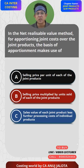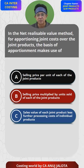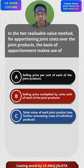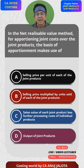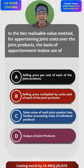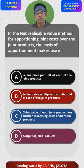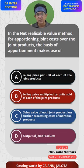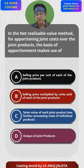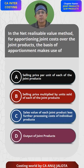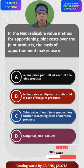Option C: sales value of each joint product less further processing cost of individual products. Option D: output of the joint product. Now, the net realizable sales value method means the notional sales value method. In this method, we take the final sales value and subtract the post-separation cost.